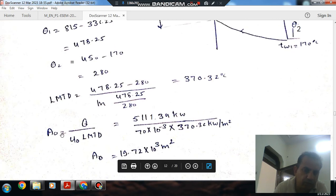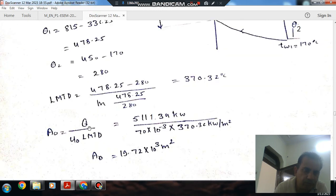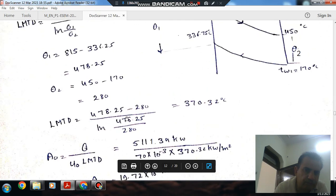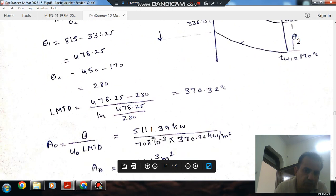Now we know that Q is equal to U₀, U₀ is heat transfer coefficient based on outer area. So that is given, that is 70 watts per meter square per Kelvin. So we can find out A₀ because LMTD is known. So LMTD is 370.32 and 70 watts per meter square is given.